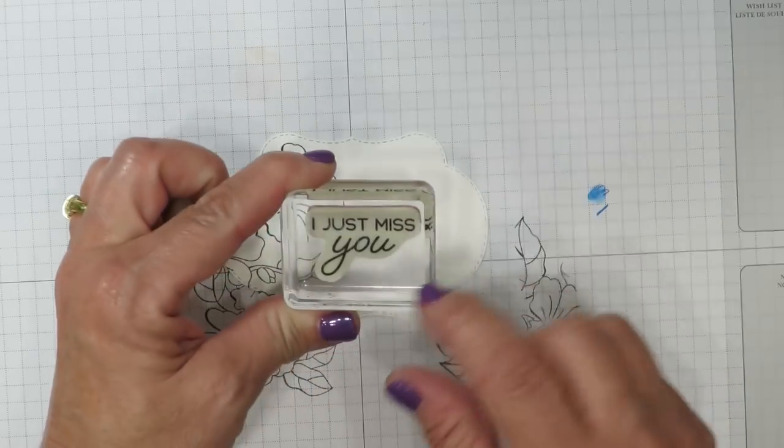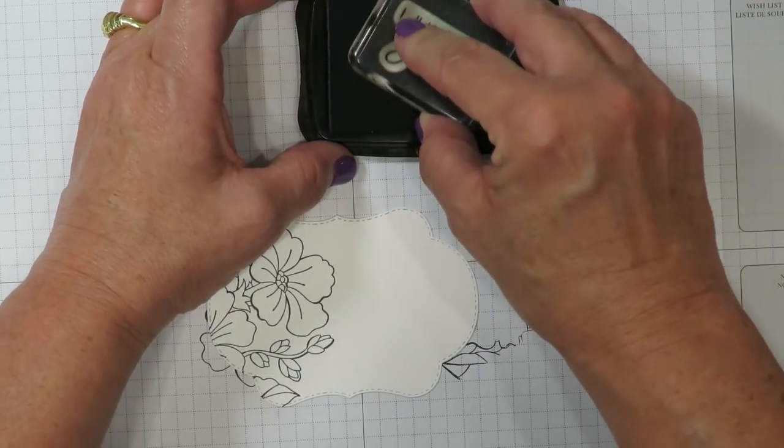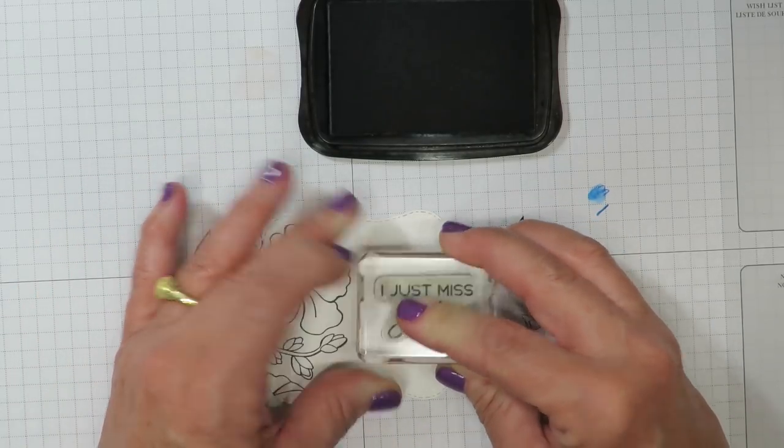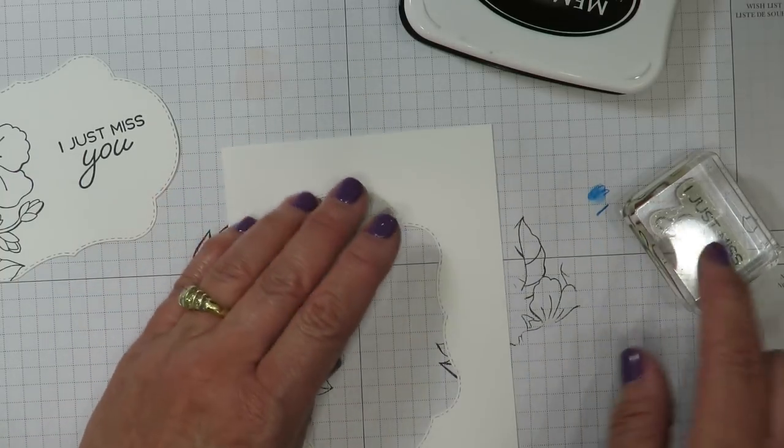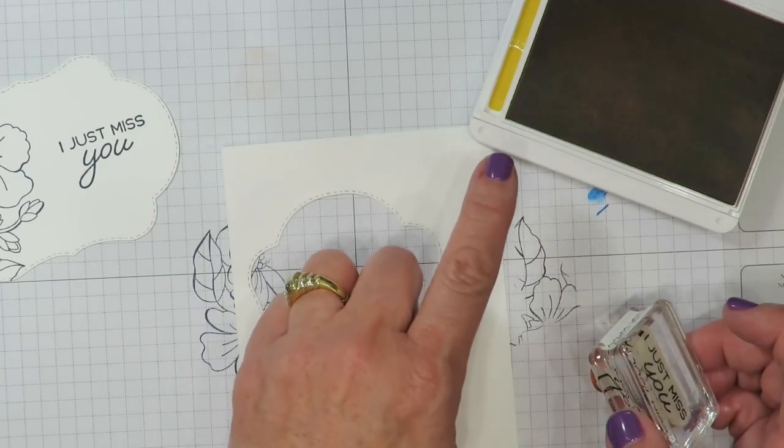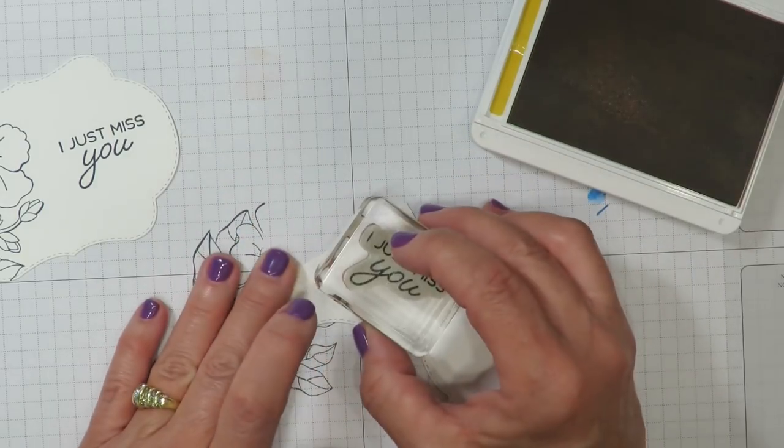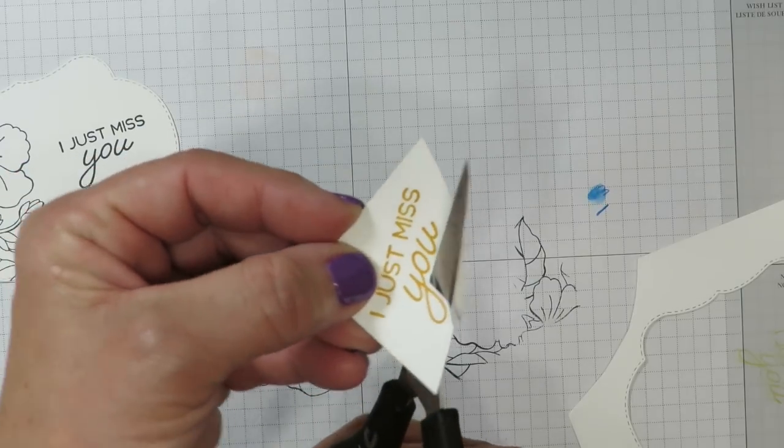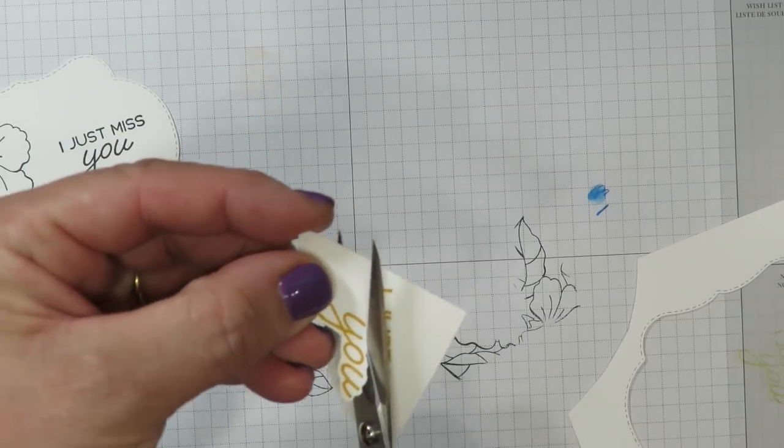From that same stamp set I've gone ahead and mounted the words that say I just miss you. And I'm going back to my memento ink and I'm going to ink up my words and stamp them off here to the side on this image. Just cleaned off the stamp off camera. And then that scrap piece of cardstock I'm going to stamp this one more time in the crushed curry. One of the beautiful things about Stampin' Up products are the color coordination. So this is going to coordinate with the Designer Series Paper just beautifully. Again I'm going to cut this a little bit smaller to make it easier for me to work with. And all I'm going to do is the same thing like I did with the flower. I'm just going to come around those letters leaving a little bit of cardstock showing and just cutting them out.